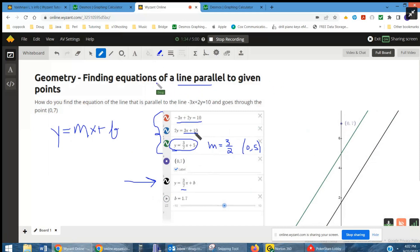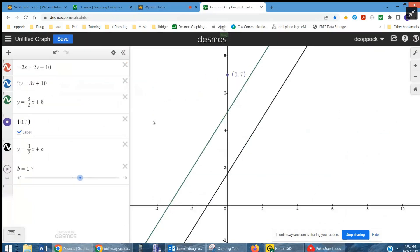Well, 0, 7 actually is the y-intercept, so for the second line we want b to equal 7. So y equals 3 halves x plus 7.